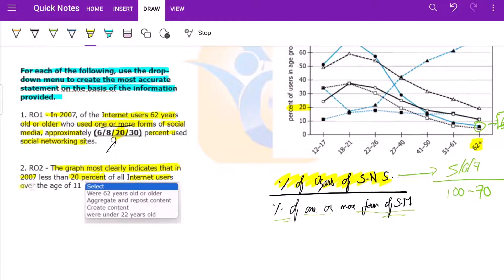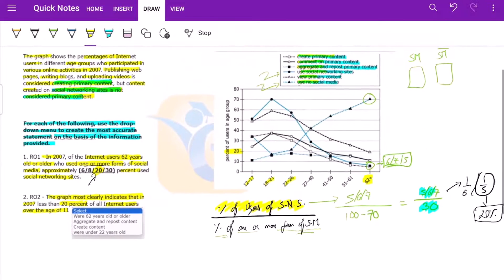The graph most clearly indicates that in 2007 less than 20 percent - okay this is our 20 percent mark - of all internet users over the age 11 were 62 years old or older. We do not directly have something to support this. Aggregate and repost content.